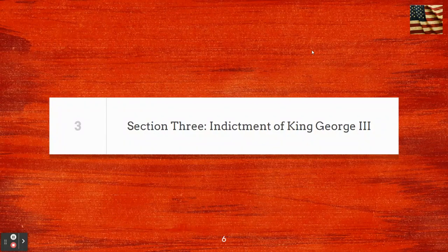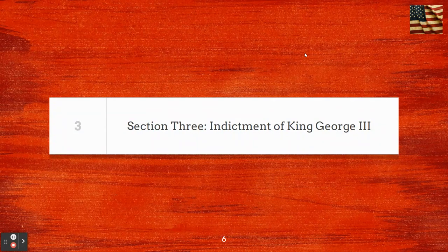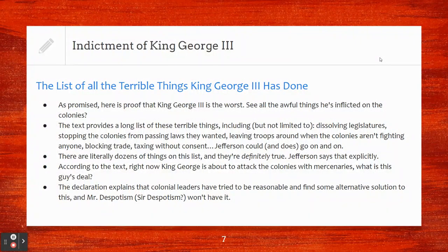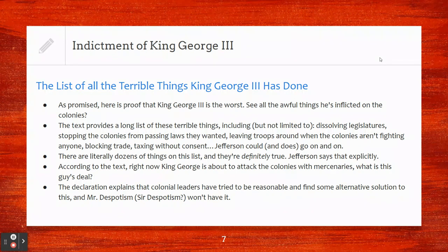Section three, the indictment of King George III. This is where they lay out the serious charges against King George III — the list of all the terrible things he has done. As promised, here is proof that King George III is the worst. See all the awful things he's inflicted on the colonies? Go back and look at that document — you can see them all listed. I'm not going to say them all verbatim here, but feel free to read that section. It's quite interesting.